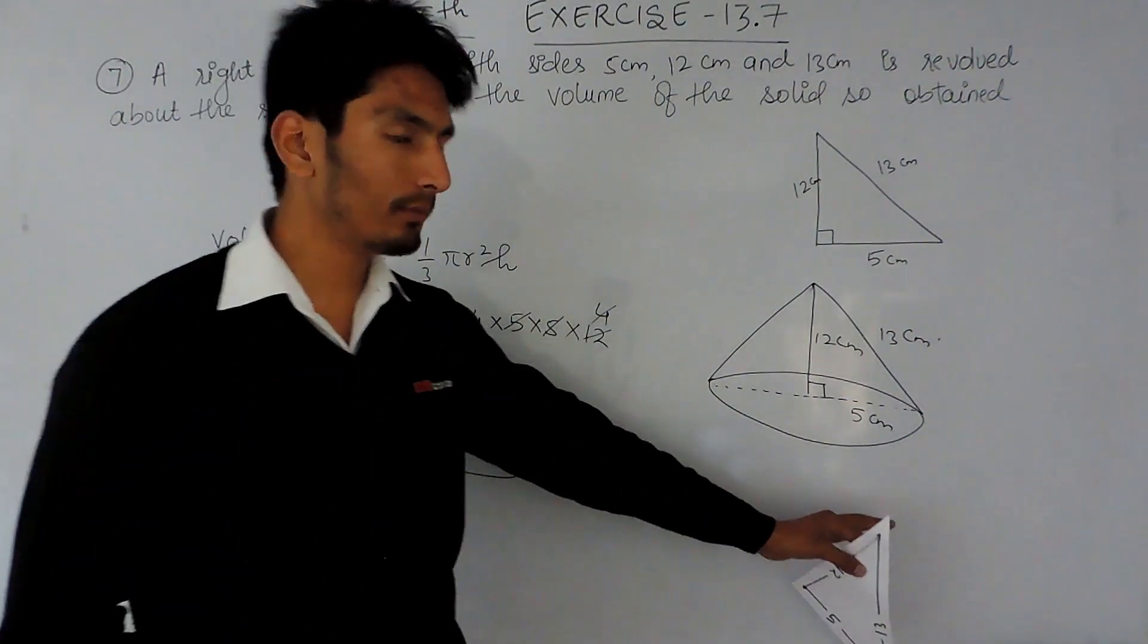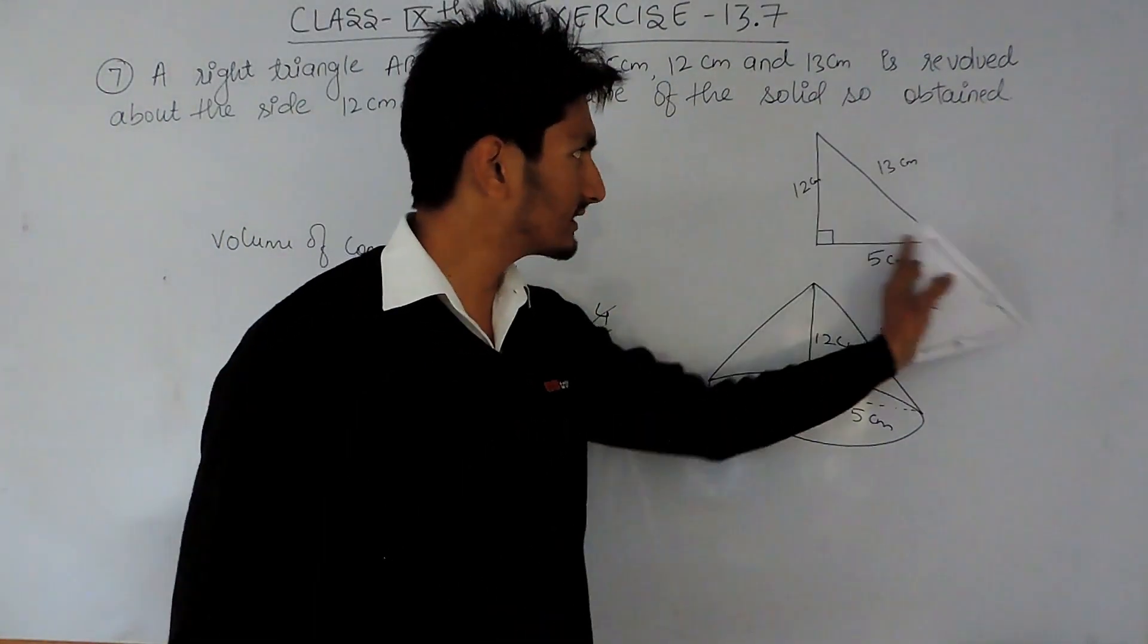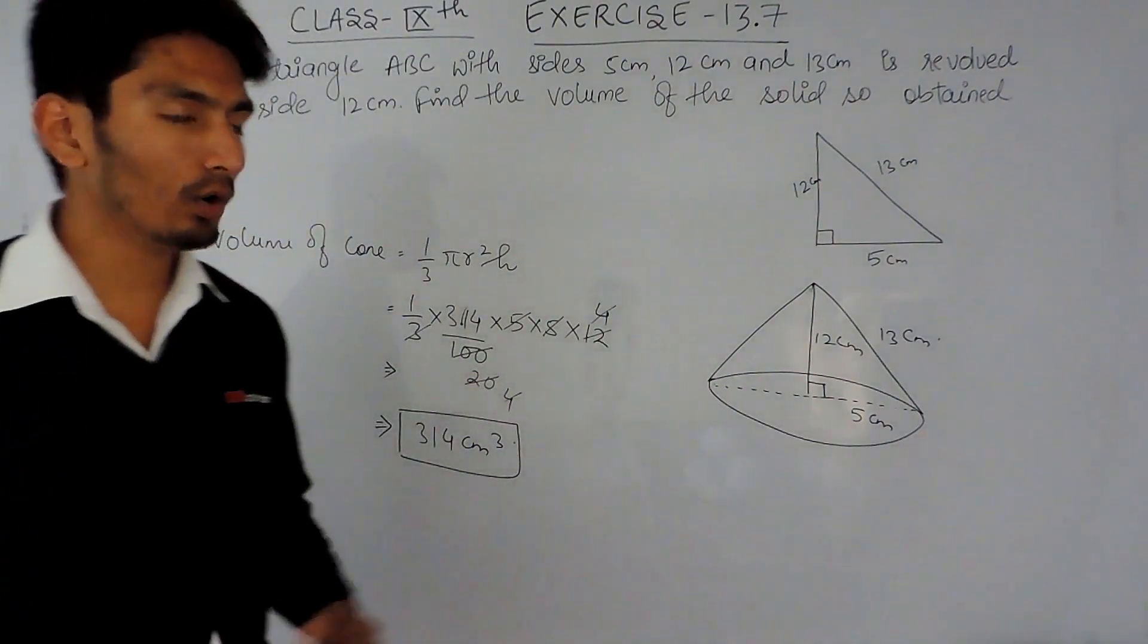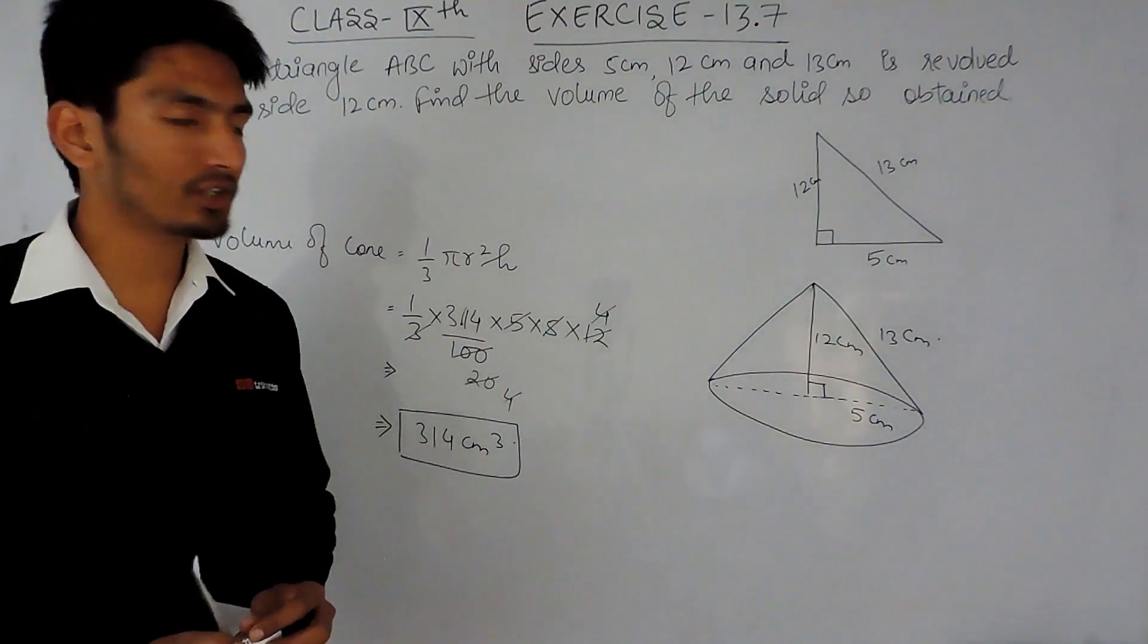This is the volume for the cone formed when this right angle triangle is revolved about side 12. So this is how you can solve this particular question.